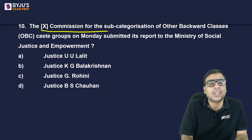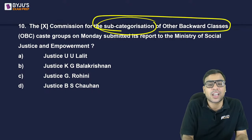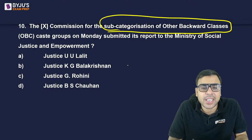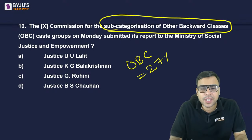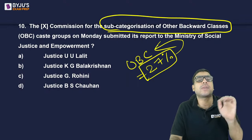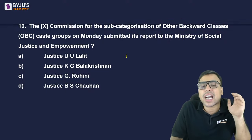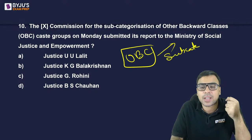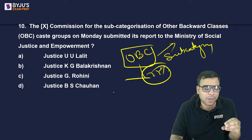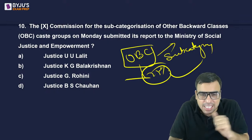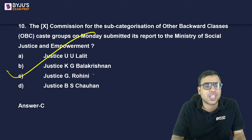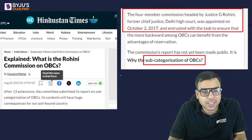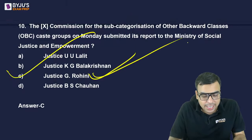The next question is about the commission for sub-categorization of OBC. OBC is given 27% reservation, and the proposal is to split this 27% into different sub-categories. C is the right answer to this question.